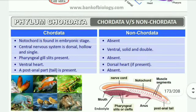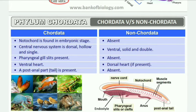Common question: differentiate between Chordata and Non-chordata. In Chordata, notochord is found in the embryonic stage; in Non-chordata, it is absent. The central nervous system in Chordata is dorsal, hollow, and single. In Non-chordata, the central nervous system is ventral, solid, and double.